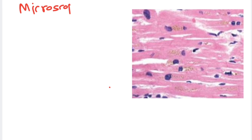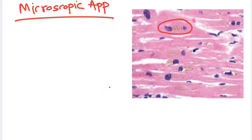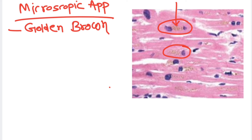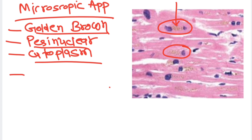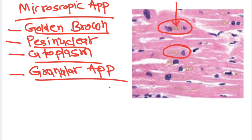Now I will show you the microscopic appearance of lipofuscin pigment. If you observe carefully, you can see this is lipofuscin pigment — it has a golden brown color. The location is perinuclear, adjacent to the nucleus, and it is present in the cytoplasm of the cell. If you observe carefully, you can see that this pigment has a fine granular appearance.